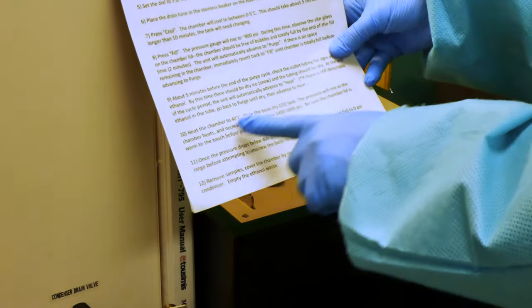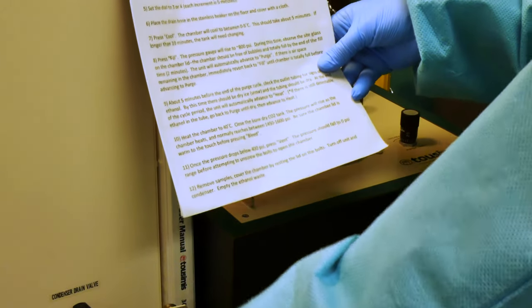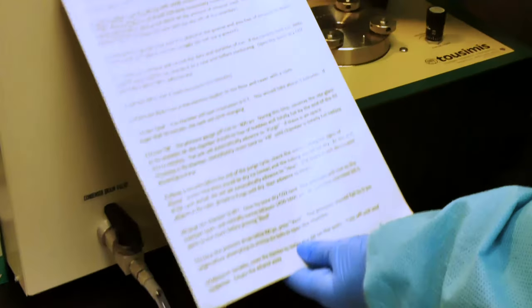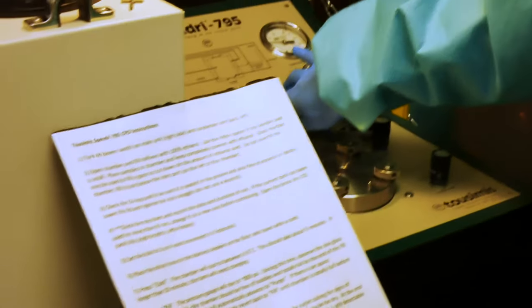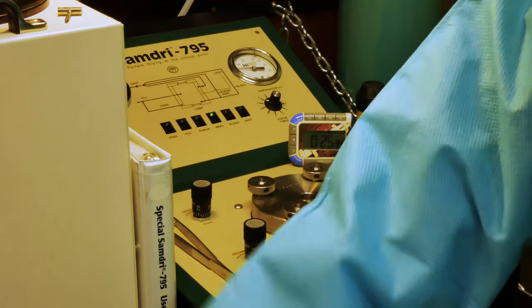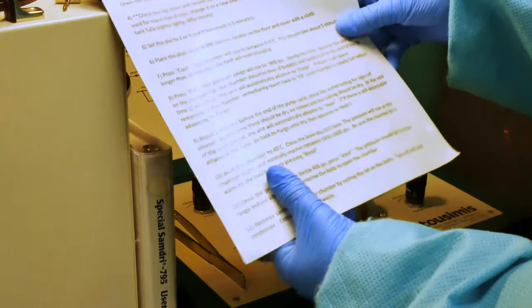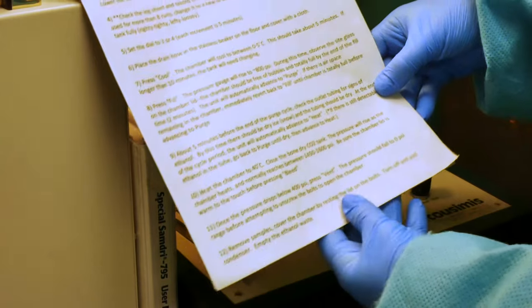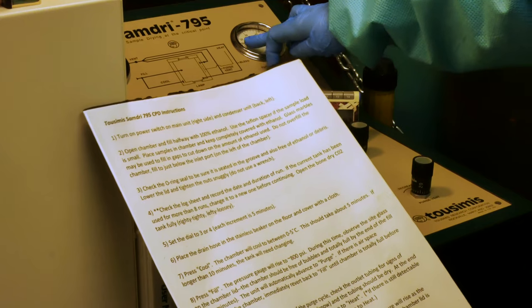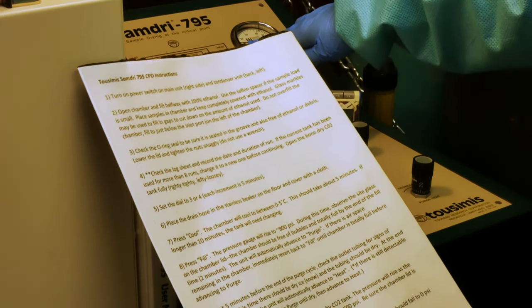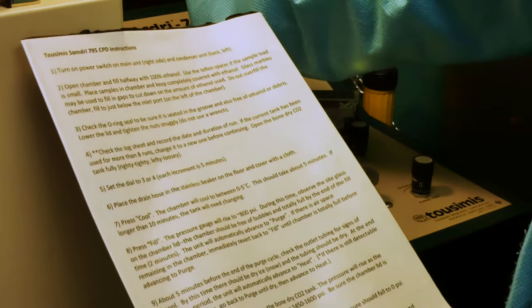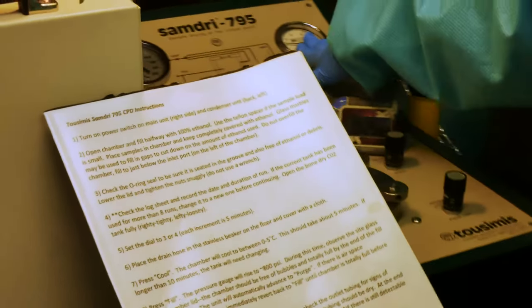So when it came to the end of the purge cycle, we continued to see the frosting get thicker and thicker. And so it did advance by itself from purge to heat. The exchange is good when it's that frosty. At this point, now that it's advanced to heat, the chamber has started to increase in temperature. It's up to about 12 degrees right now. We're still at about 800 psi, but we will expect both of these gauges to go up.